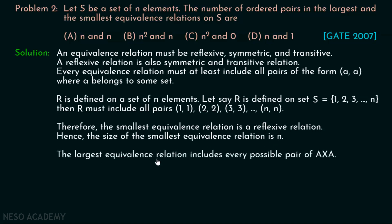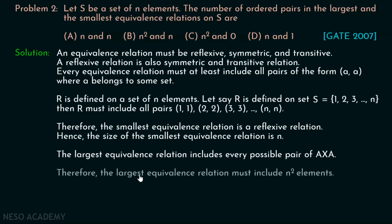The largest equivalence relation includes every possible pair from S cross S. Therefore the largest equivalence relation has N squared ordered pairs. So option B is the correct option: the number of ordered pairs in the largest equivalence relation is N squared, and in the smallest equivalence relation is N.